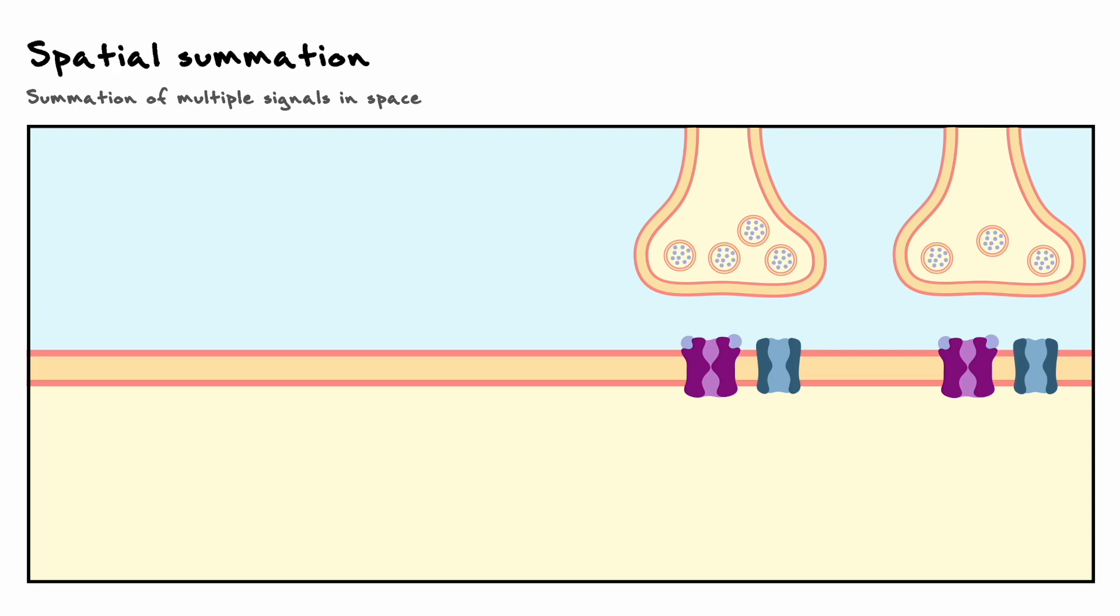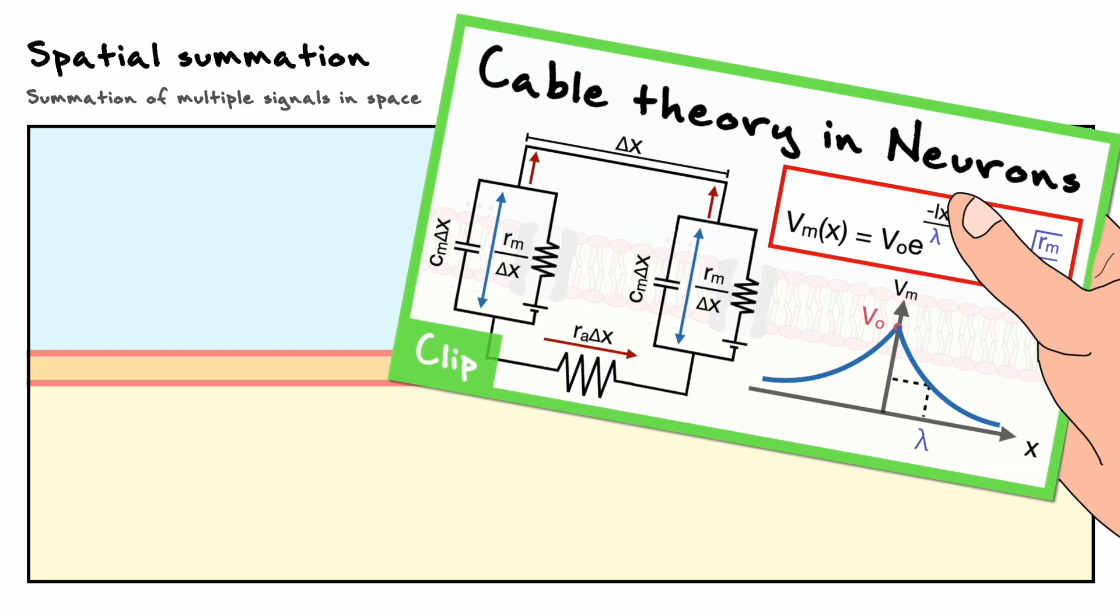Now, although they are two different measures, they can be interpreted in pretty much the same way. By the way, if ever you are unfamiliar with the space constant, I highly suggest you to watch this video on the cable theory model of the neuron, where I thoroughly explain how the constant can be derived and what it means.